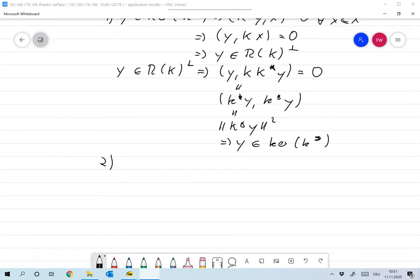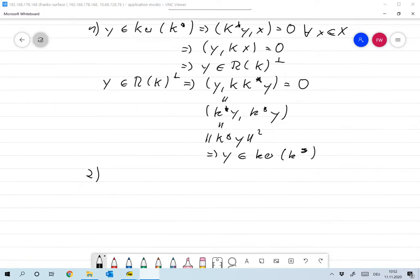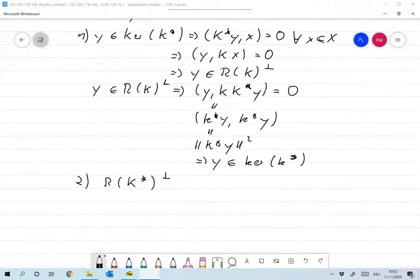Now for the second part. Of course, we can also apply the first part for K equals to K adjoint. Then the first one becomes R of K adjoint perp is the same as the kernel of K adjoint adjoint and that's K.